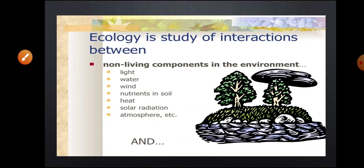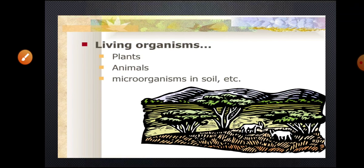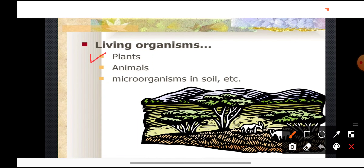To summarize the non-living components of the environment — which we will study in detail in the next lecture — these include light, water, wind, nutrients present in the soil, heat, solar radiations, and atmosphere. The biotic factors include plants, animals, and microorganisms which are present in the soil and carry out decomposition.